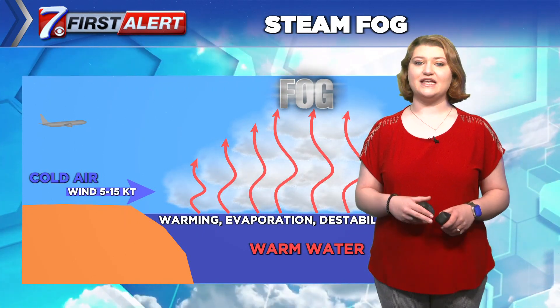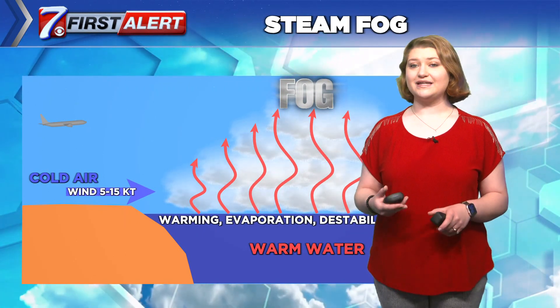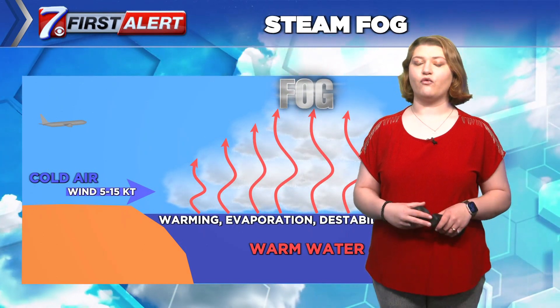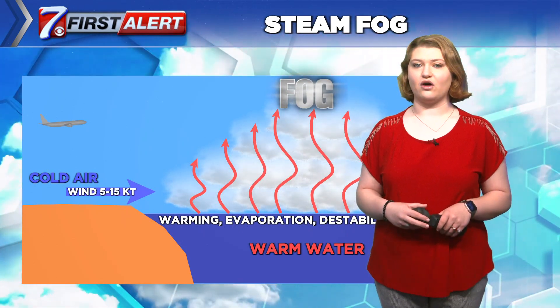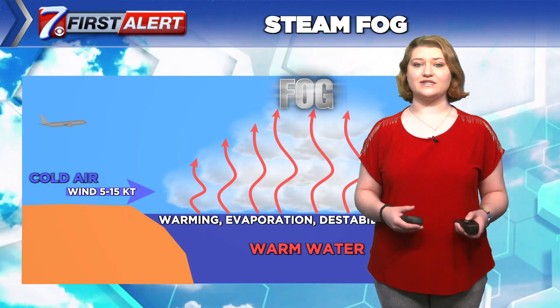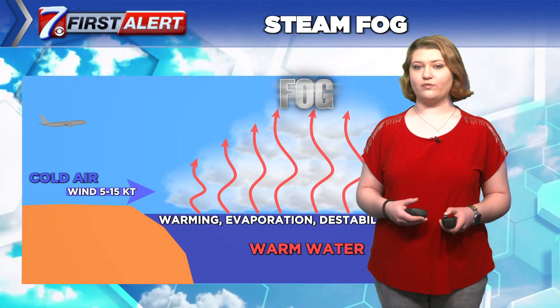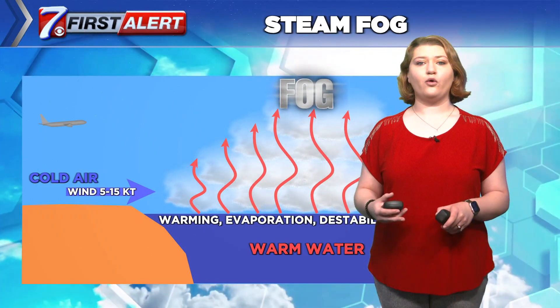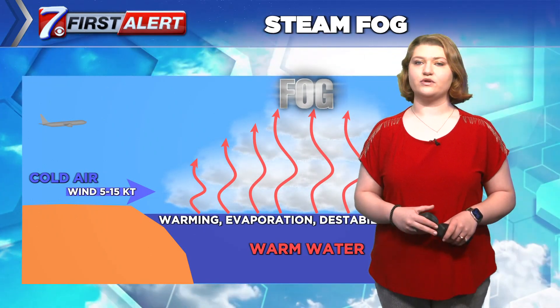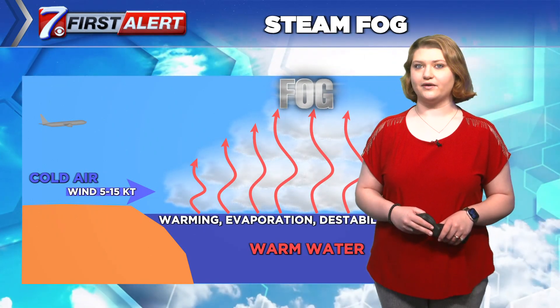Steam fog is commonly seen in the Great Lakes, but can be seen on any lake, and it forms during the fall. Formation ends when surface winds cease or change direction, or when the colder ground warms on the windward side of the water.